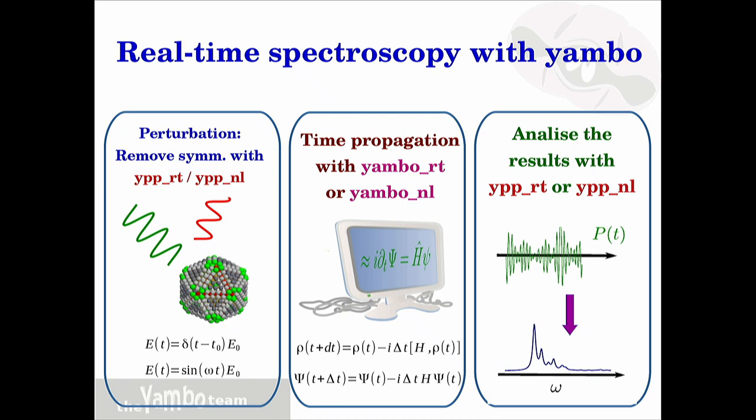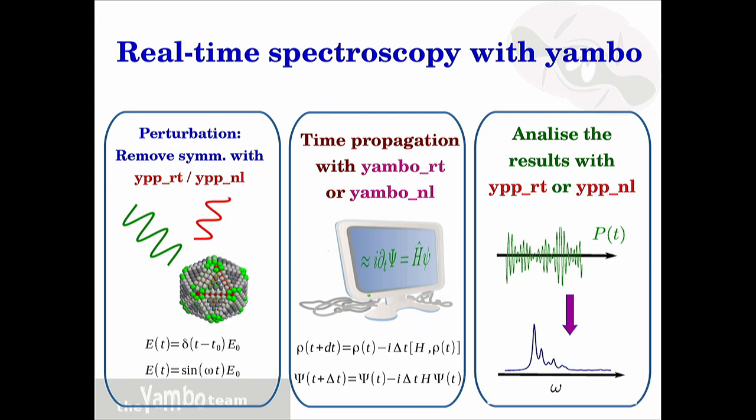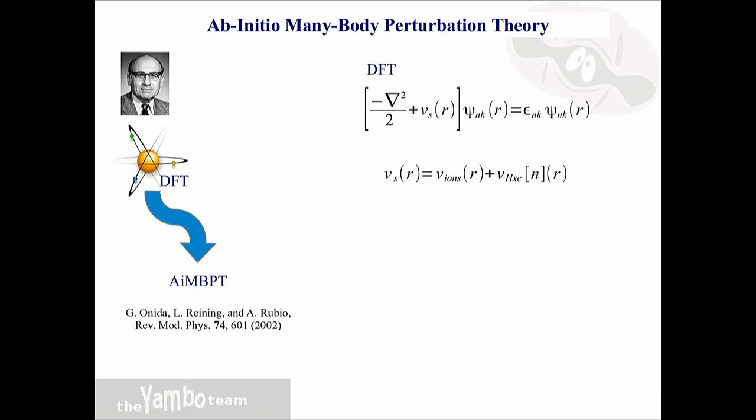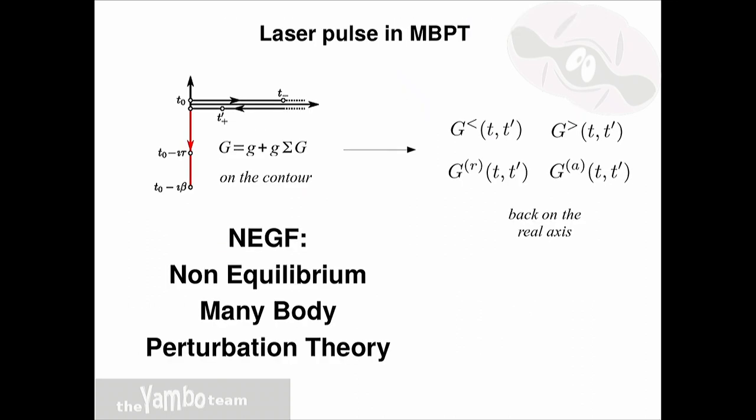This is a way to get the absorption, so in a sense it contains the same physics as the linear response, or even beyond, and contains the same physics as the Bethe-Salpeter if you have the proper approximations. Yambo is a many-body perturbation theory code—an ab initio many-body perturbation theory code. Like in the other tutorials, one has to start from a density functional theory calculation and use the wave functions and energies to build all the many-body perturbation theory quantities. The main difference for real time is that now we also have to deal with a time-dependent laser pulse.